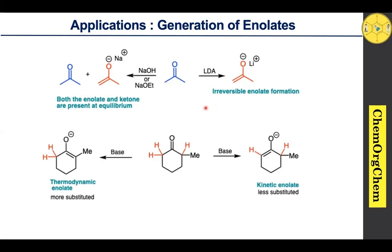Next we should see thermodynamic versus kinetic enolate. Consider this unsymmetrical cyclohexanone: the left side alpha carbon has two alpha hydrogens, while the right side alpha carbon has one hydrogen and one methyl group. When a base takes the proton from the sterically hindered site, it generates a more substituted enolate called the thermodynamic enolate, which is somewhat more stable due to hyperconjugation stabilization. When a base takes the proton from the less hindered site, it produces the corresponding less substituted enolate called the kinetic enolate.